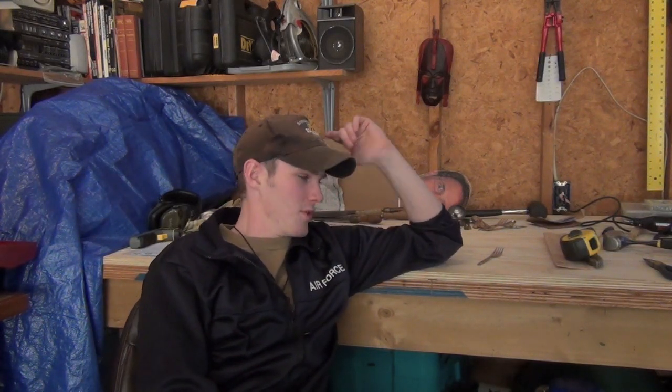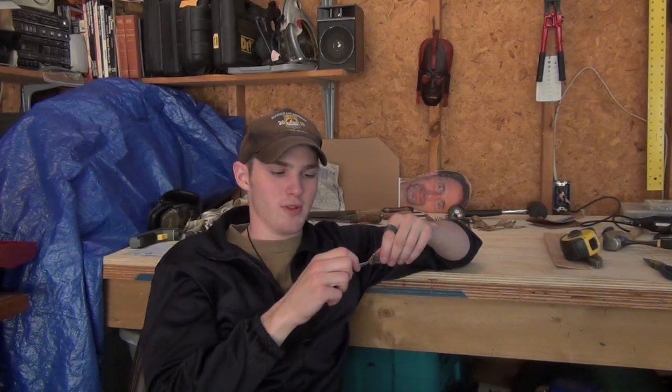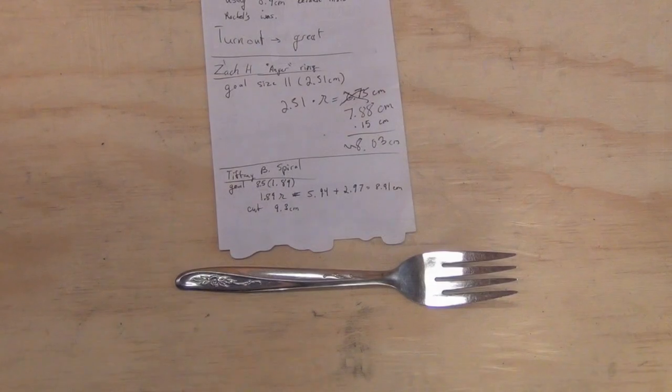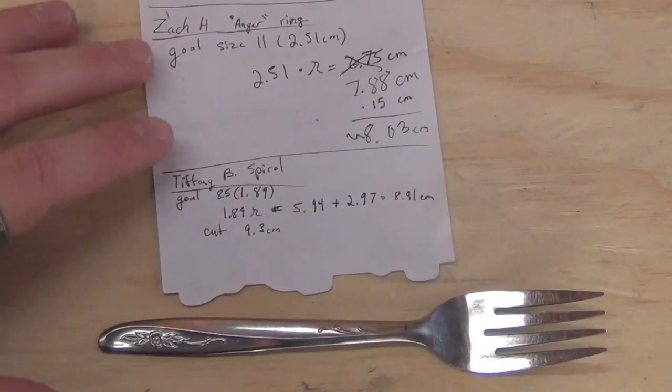Oh hello there, hey guys. Today we're going to make a spiral spoon ring out of this fork here. So let me show you how I make them. As with all rings, you're going to have to do a little bit of math here.